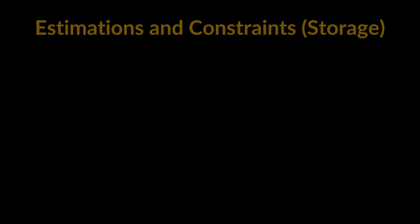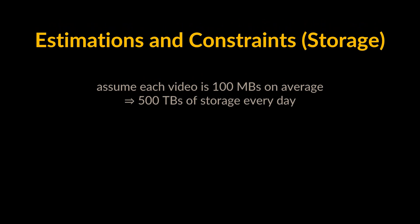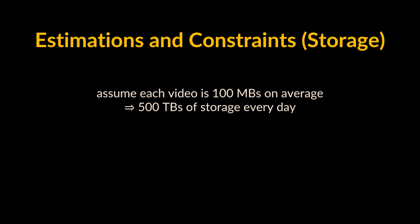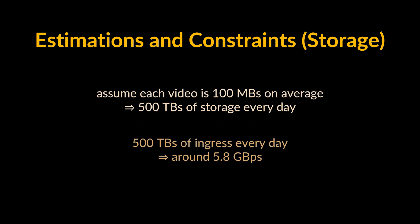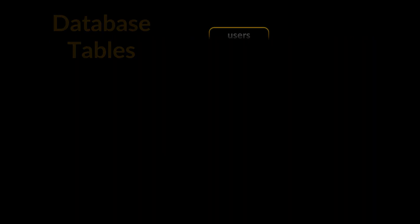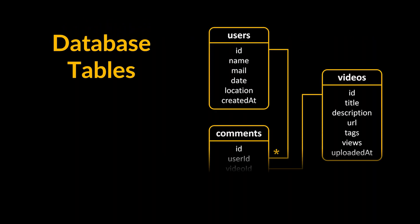Concerning storage: if we assume each video is 100 megabytes on average, we will require about 500 terabytes of storage every day. As our system is handling 500 terabytes of ingress daily, we will require a minimum bandwidth of around 5.8 gigabytes per second. With this out of the way, let's delve into the general data model.